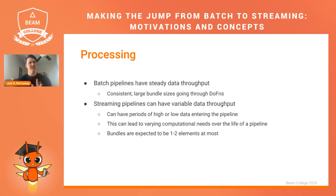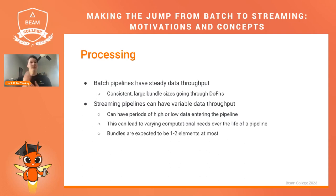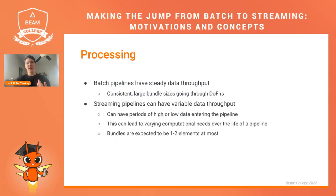For processing pipelines: batch pipelines generally deal with pretty steady throughput. Each transform should take around the same amount of time, and you have large bundles being processed at the same time — a pretty steady stream from start to finish. Streaming pipelines have variable data throughput because you could get more or less data at any given point — periods of high activity, low activity. You have varying computational needs over the life of your pipeline, and you're processing one to two element bundles at most, whereas in batch you're ideally looking at much larger bundles.